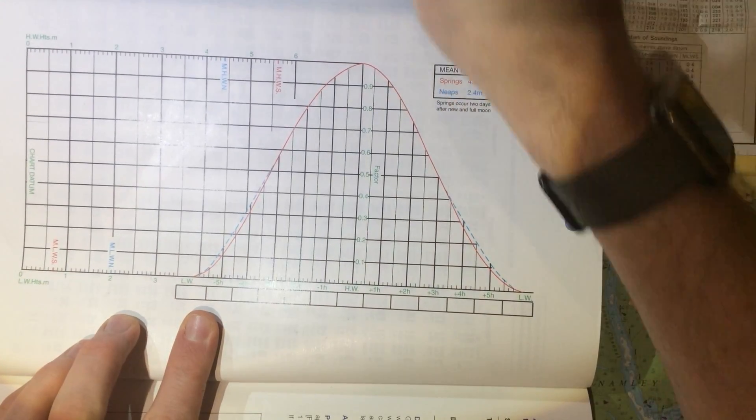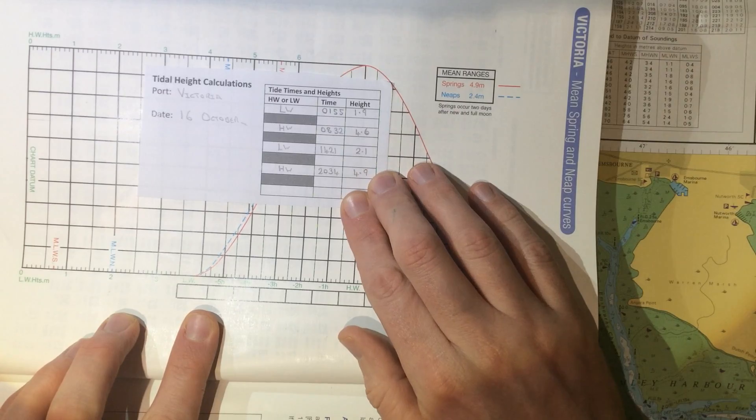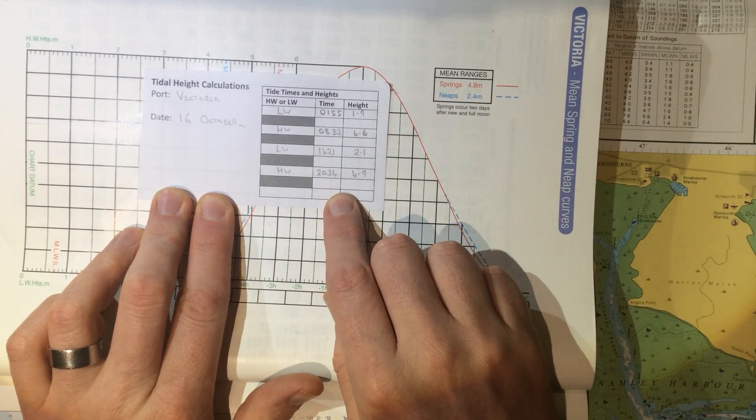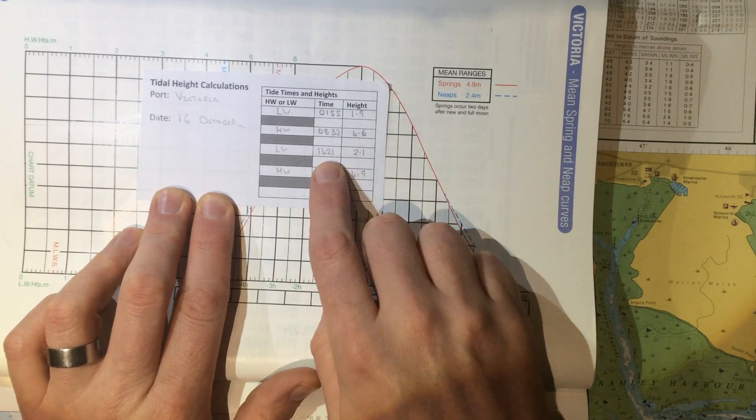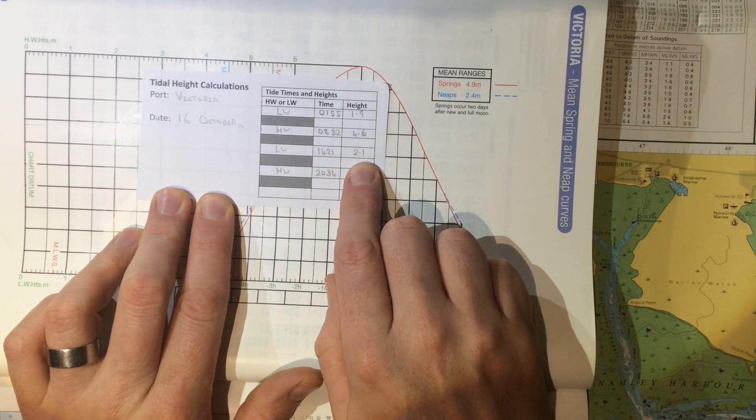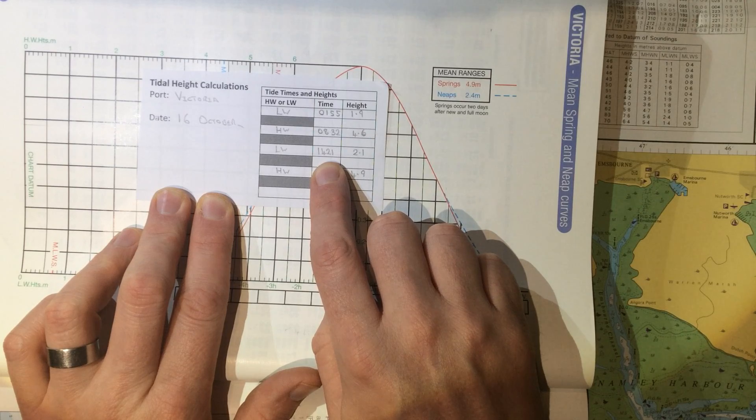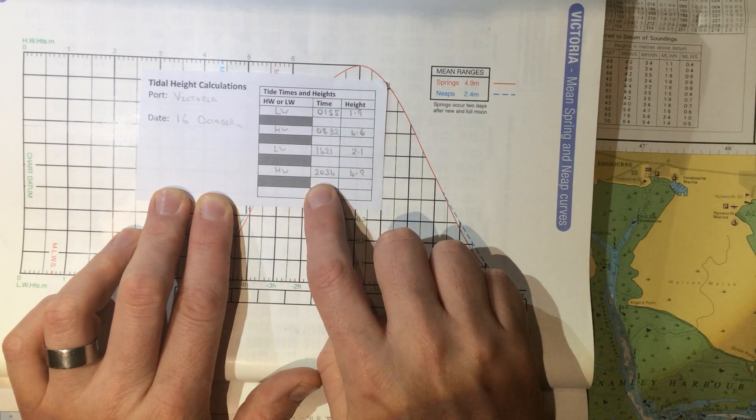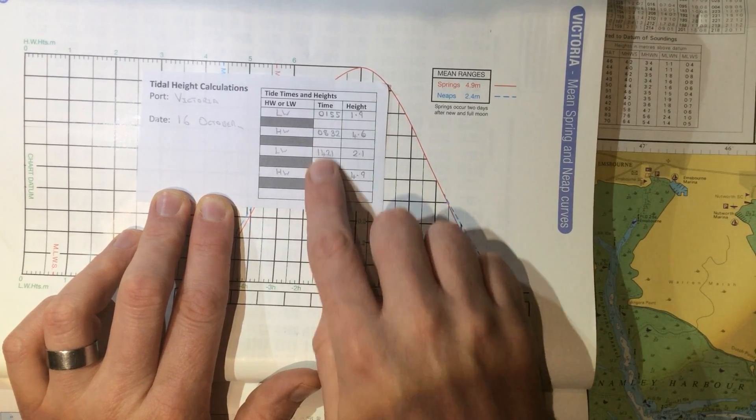Now looking at our high and low water times for the 16th of October, we're interested to find the height of tide at a particular time in the late afternoon. We know that the tide is going to be 2.1 metres at 4:21 and we know that it's going to be 4.9 metres at 34 minutes past 8 in the evening. But what about the times in between?